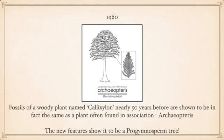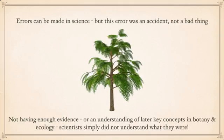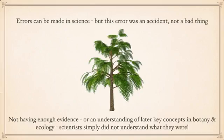With these new features bundled into Archaeopteryx, they concluded: this is a tree — a pro-gymnosperm tree, to be exact. Errors like this actually come along in science; they're not necessarily errors, mind you. But really, at the time, scientists simply didn't have the basic understanding of key concepts in botany and ecology that we do today to realize that these were one and the same species. So not simply understanding what they were looking at, it's actually pretty easy to make the mistake.